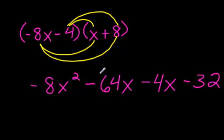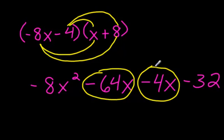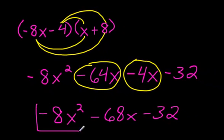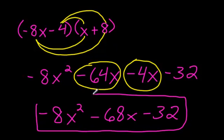Do we see any like terms here? Yes, we do. These two guys are like terms. Put them together. What do we get? Well, first of all, write that negative 8X squared. Put these two together. That would be negative 68X. I almost wrote 60, but it's 68X minus 32. We have just expanded or multiplied two binomials. And here's our answer.